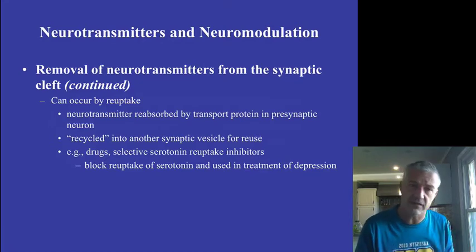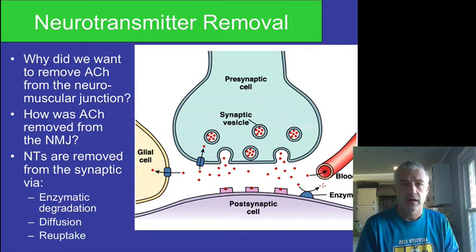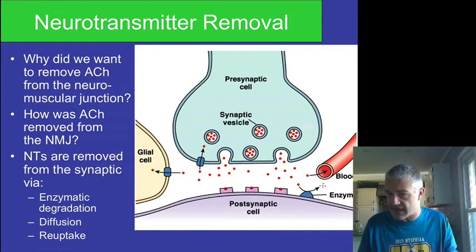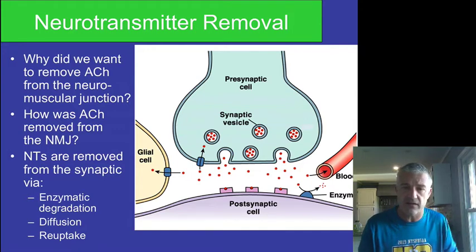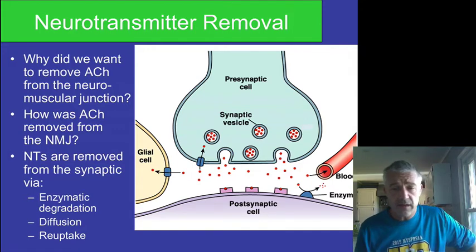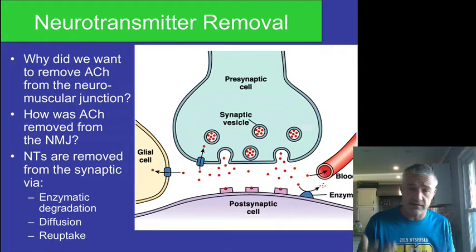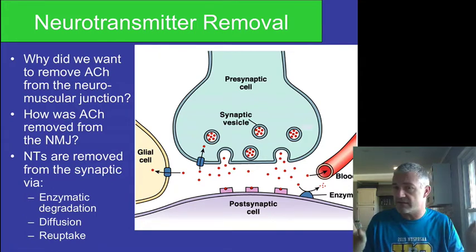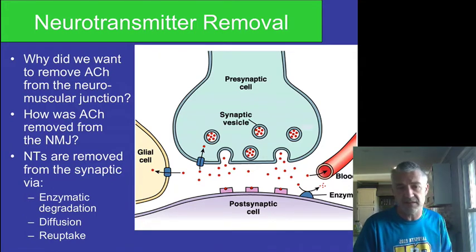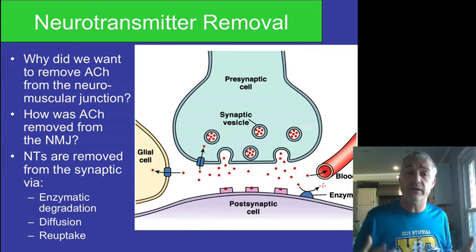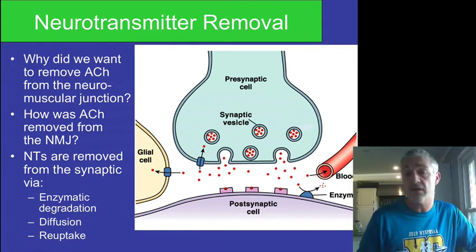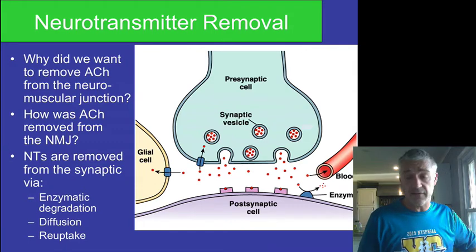There are ways that drugs can alter this. We want the neurotransmitter removed because if we keep it in the synapse it's going to continue to stimulate that cell. Sometimes it diffuses into the blood and gets broken down by an enzyme, gets pumped back into glial cells, or gets pumped back into the presynaptic cell. These are all ways we can clear things like acetylcholine or other neurotransmitters from those synaptic clefts.